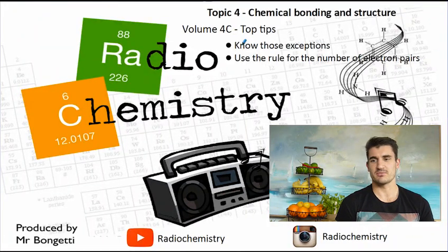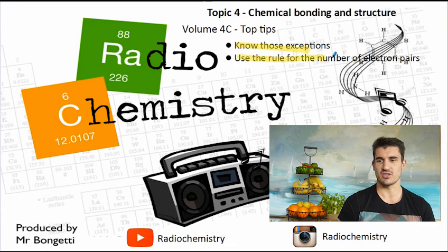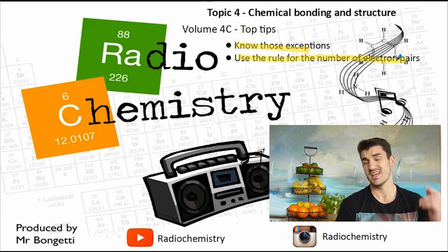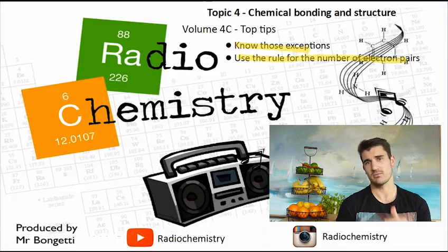So volume 4c, some top tips: know some of the exceptions and use that rule to try and identify the number of electron pairs. This one might take some practice so we might practice in class a little bit more. Thanks for watching guys, don't forget to drop a like on the video, subscribe if you're new, and I'll see you next time.